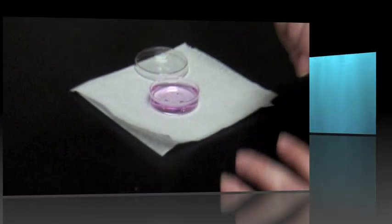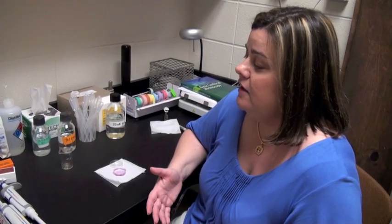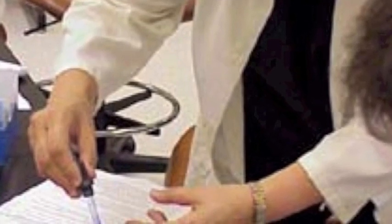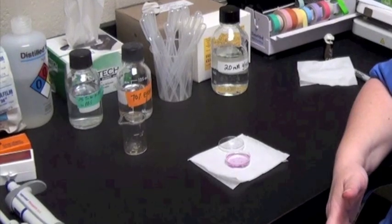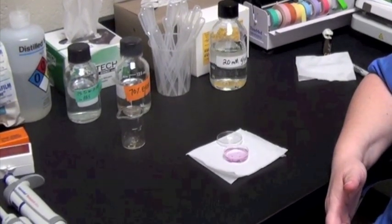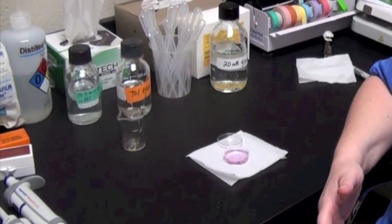An ideal fixative would be something that preserves the three-dimensional architecture of your sample and protects it from light. It's not going to be easy for all fixatives to accomplish everything that you want, so there's no real perfect fixative, but there are some that are better than others and some that are better for different types of microscopy.